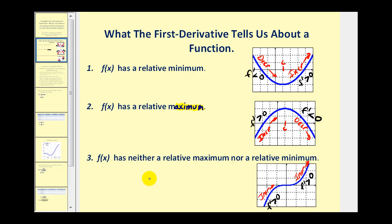Sometimes when you have a critical number, there may not be a relative extrema. For example, x equals zero would be a critical number, but the first derivative does not change sign on either side of x equals zero.